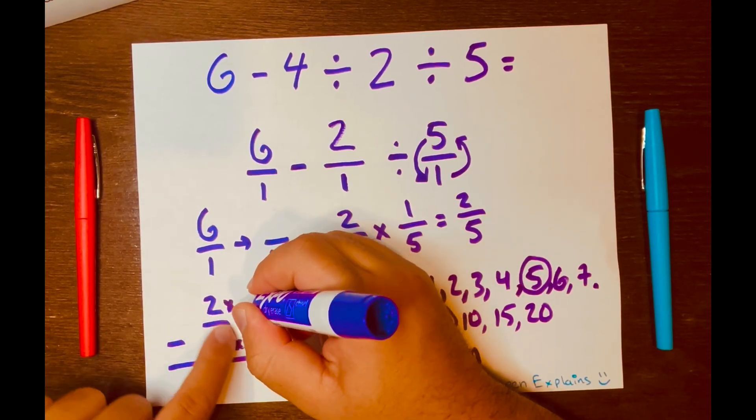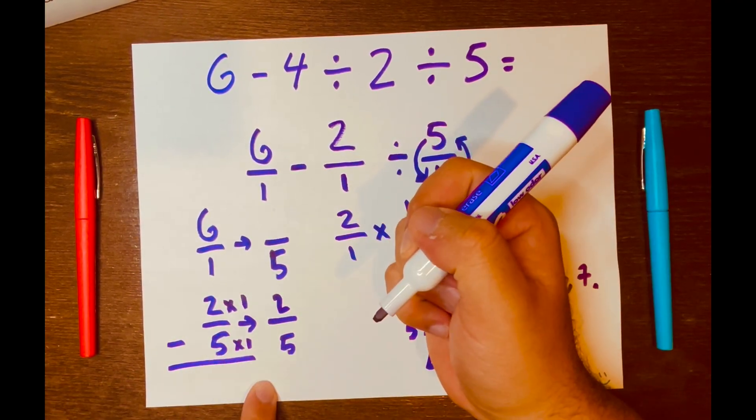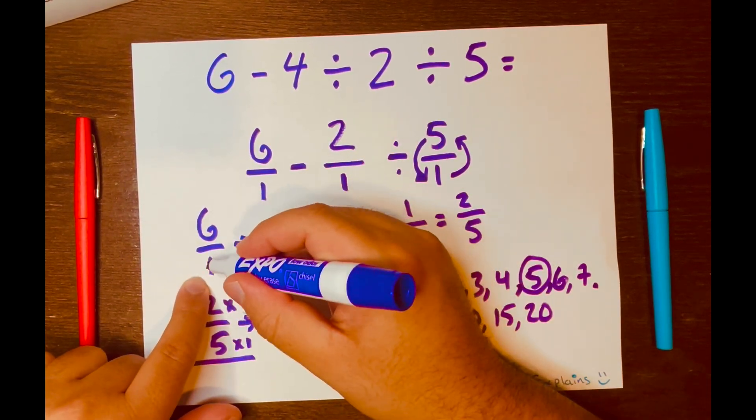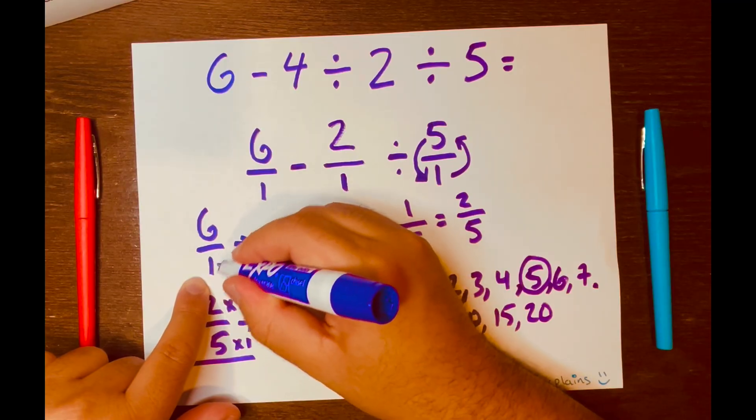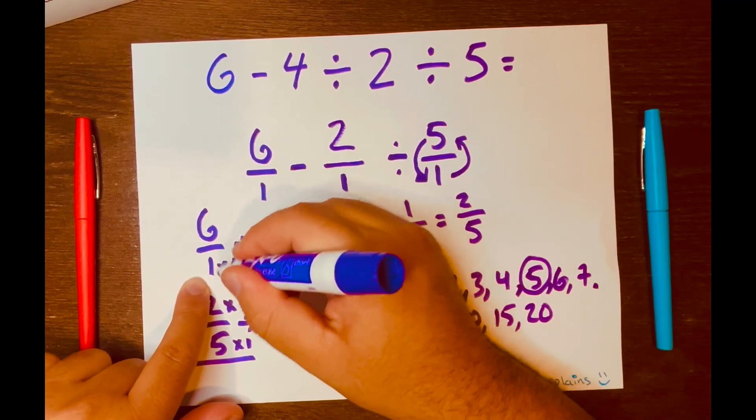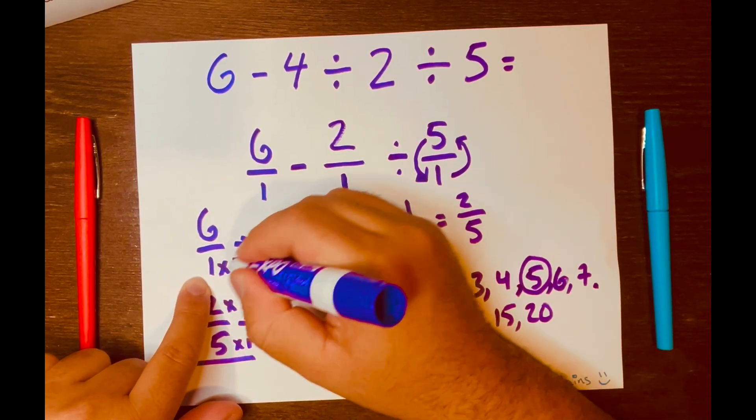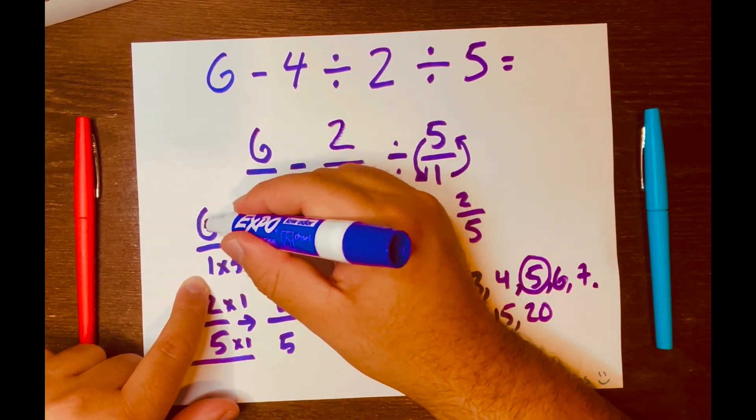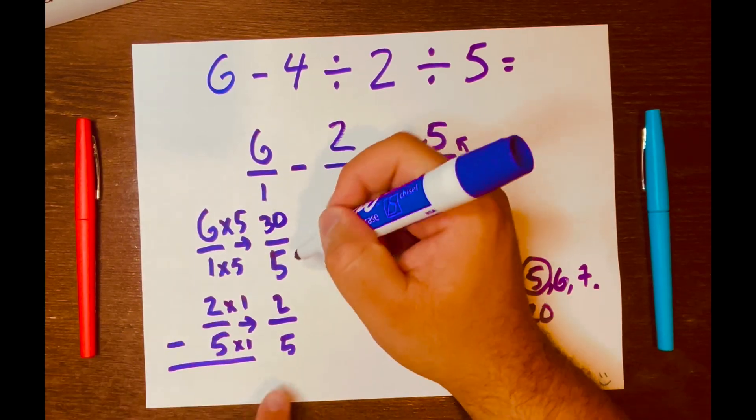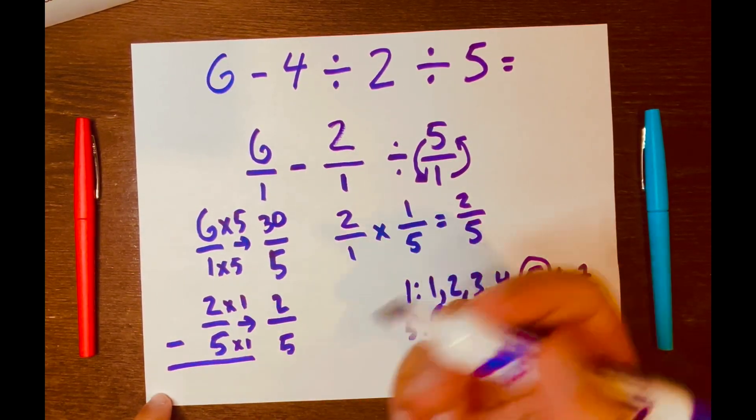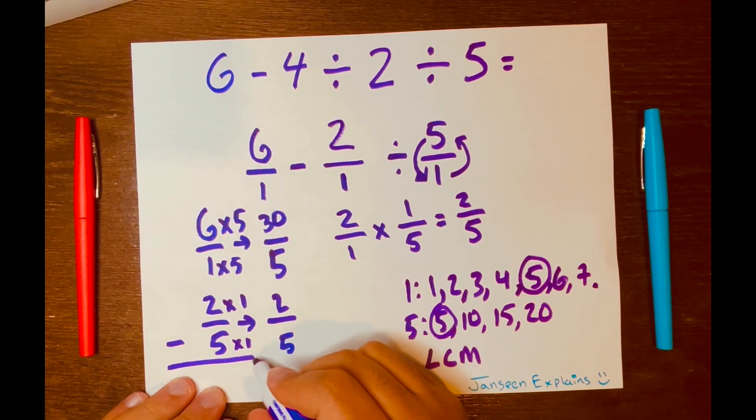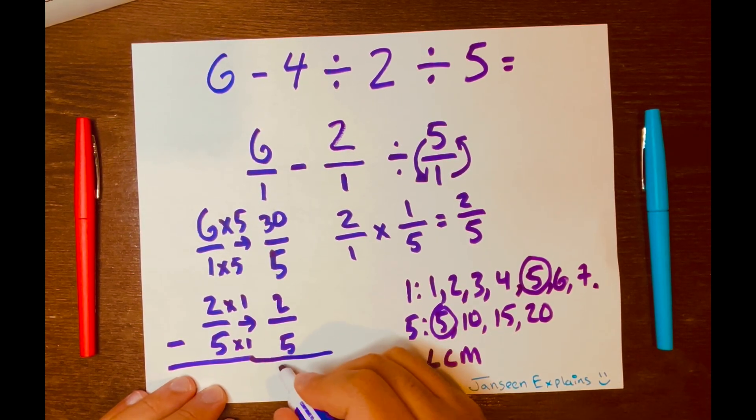So what you do down here, you do on the top. And that same thing here. What times 1 gives you 5? 5. So what you do down in the denominator area, you do on the numerator area. So 6 × 5 is 30. And so 30 - 2 is what? 28. So you have 28/5.